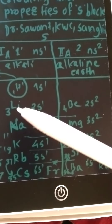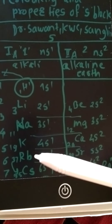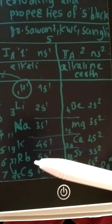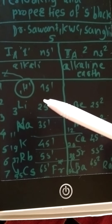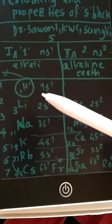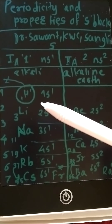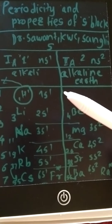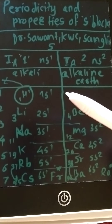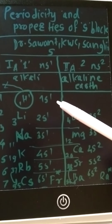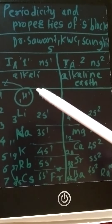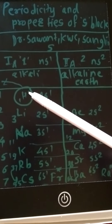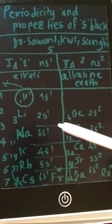The periodic trends we study include atomic sizes, oxidation states, ionization energies, electron affinities, and electronegativities. These periodic trends determine their compound formation properties. We will also study the physical and chemical properties of these elements.